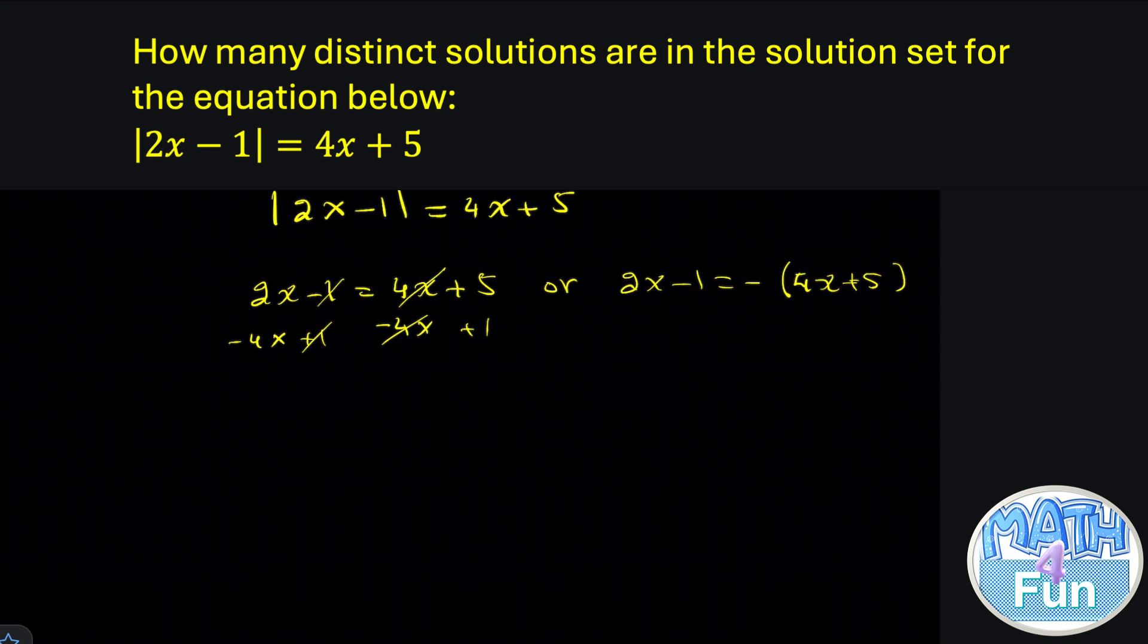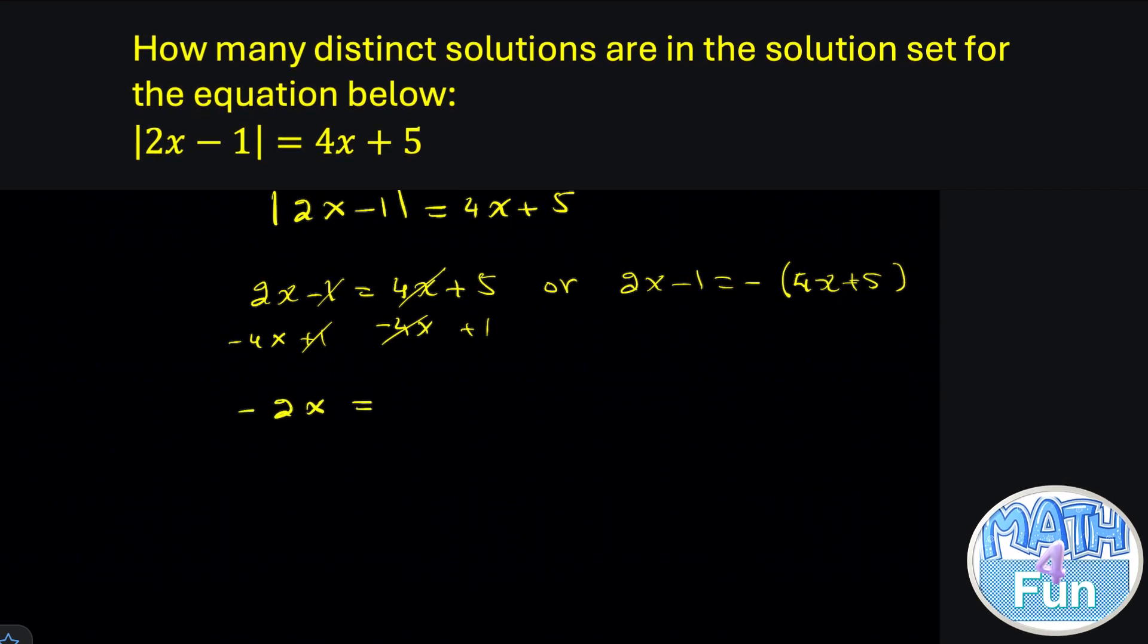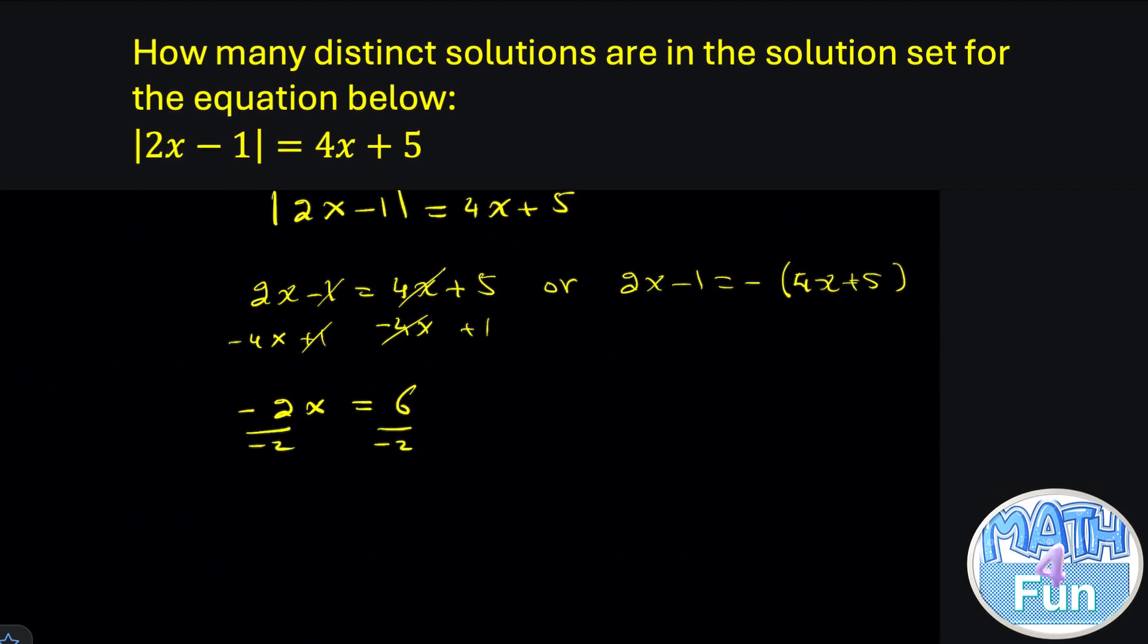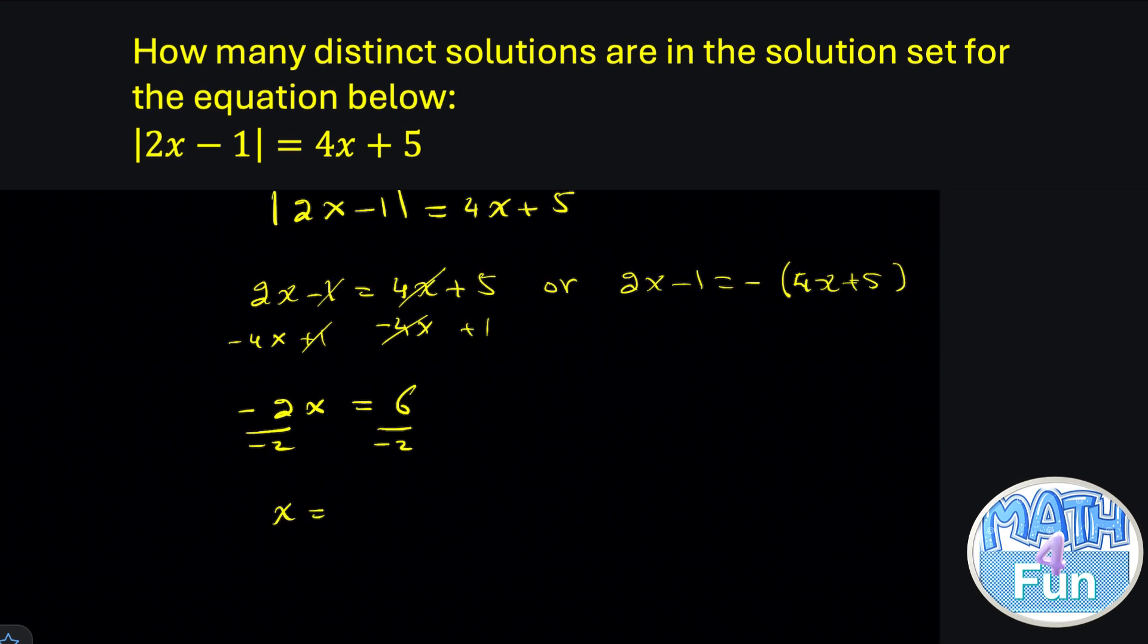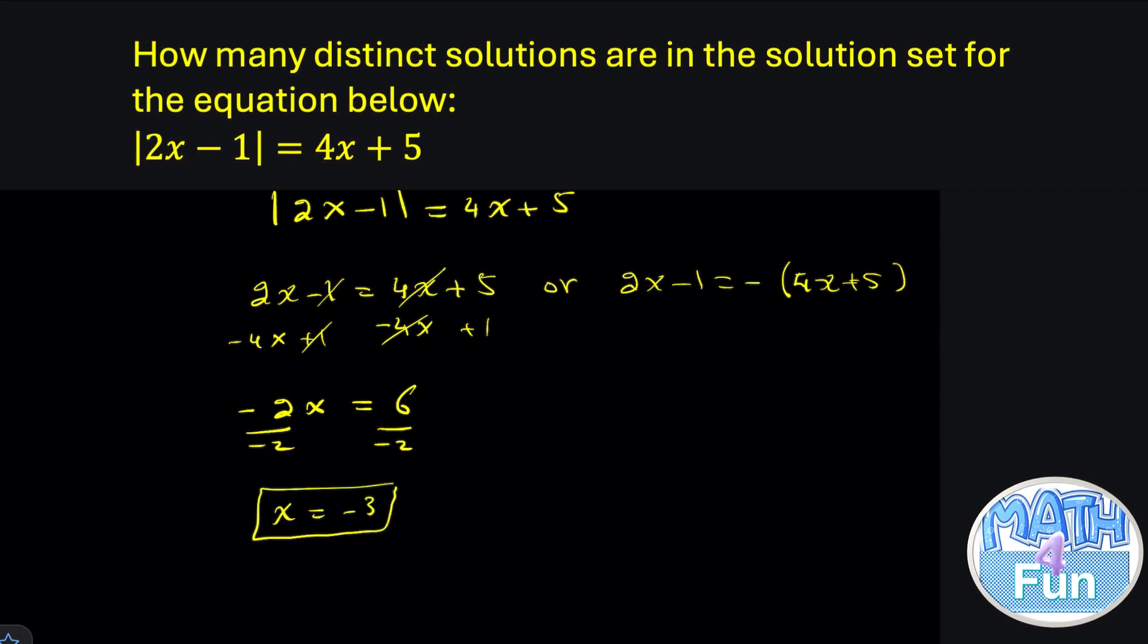We get cancel. 4x cancel. We get 2x minus 4x which is minus 2x is equal. 5 plus 1 which is 6. Divide by negative 2. We get x is equal to negative 3. This is the first solution we get.